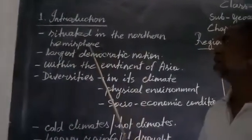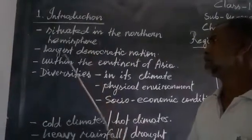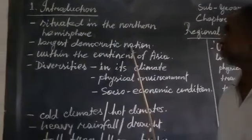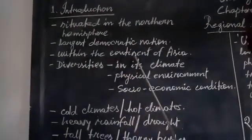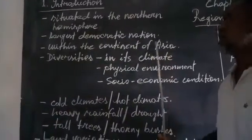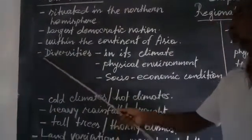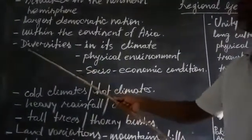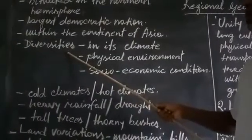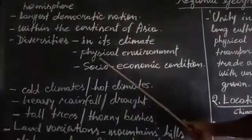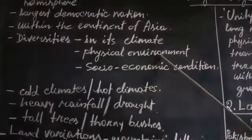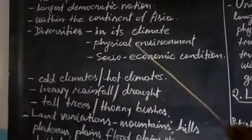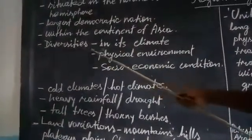India is situated in the northern hemisphere. It is the largest democratic nation in the world, which is in Asia — within the continent of Asia. India is so vast and so there are lots of diversities — meaning varieties — varieties in its climate, varieties in physical environment, and varieties in socio-economic condition.